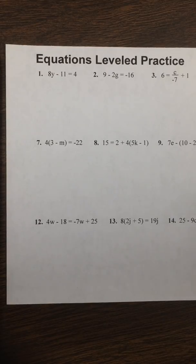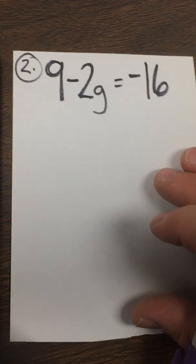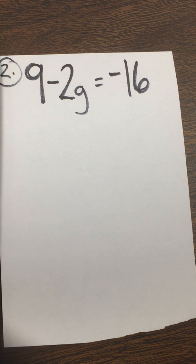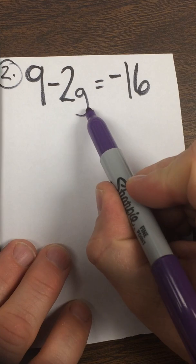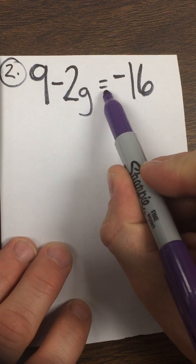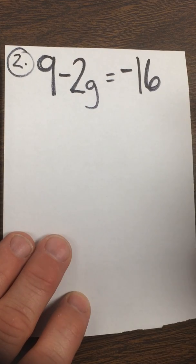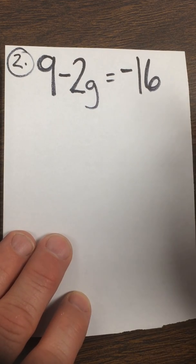I'm going to work out a couple problems off this equations leveled practice, kind of talk our way through some of these. This is number 2: 9 minus 2g equals negative 16. Remember we have an algebraic equation — algebraic because it has a variable, equation because we know what it's equal to, so we can solve this.